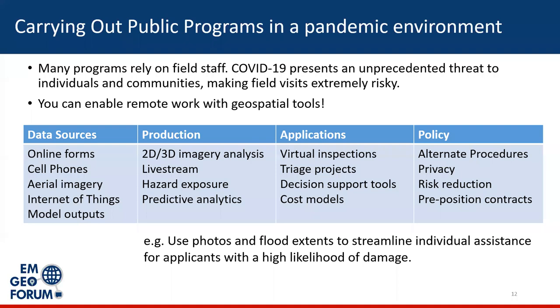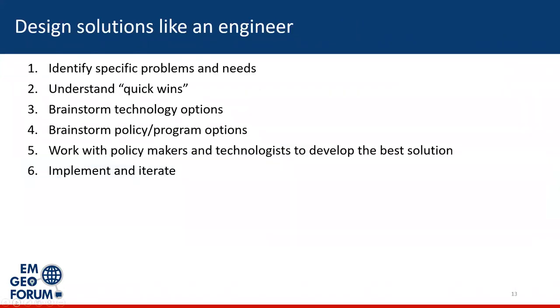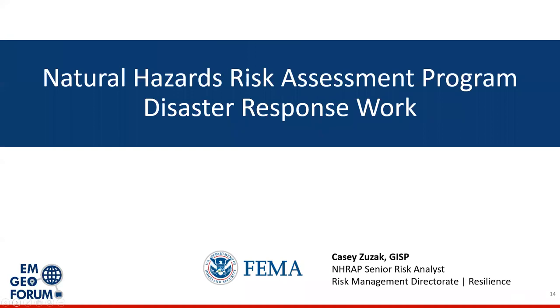We're trying to take a sort of engineering approach — first identifying the needs, then figuring out, once we understand the real program needs, brainstorming the technologies that can support those needs, and brainstorming policy options that are viable. From there, we can work with the people who run the program to develop standard operating procedures, training, and other guidance to roll those things out. If anyone has questions or would like to follow up, feel free to reach out. With that, I'll turn it over to Casey Zuzak in the Natural Hazards Risk Assessment Program.